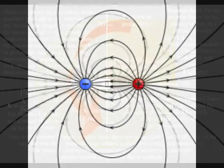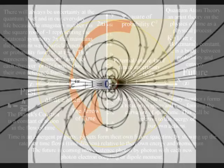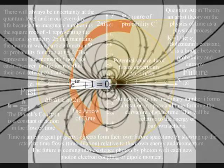What we see and feel and try to measure as time is formed by the spontaneous absorption and emission of light, with the future coming into existence photon by photon, with each new photon-electron coupling or dipole moment.